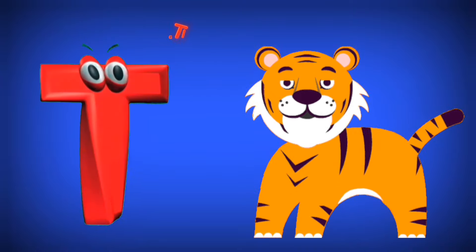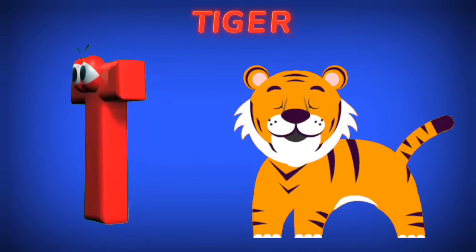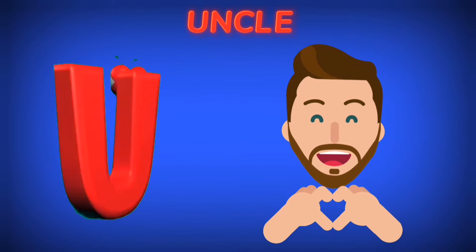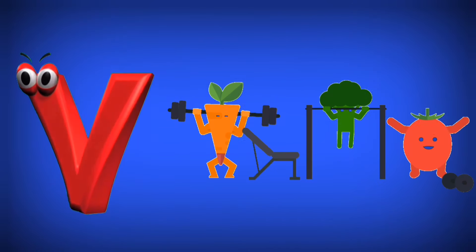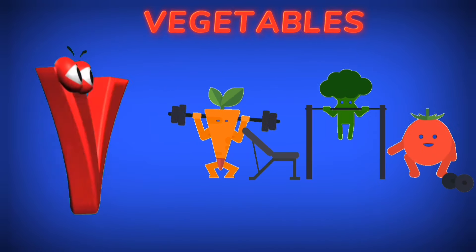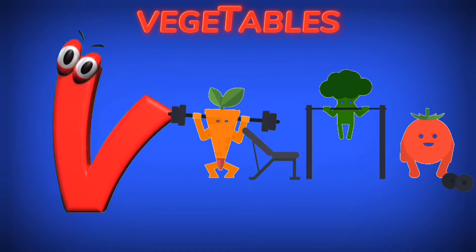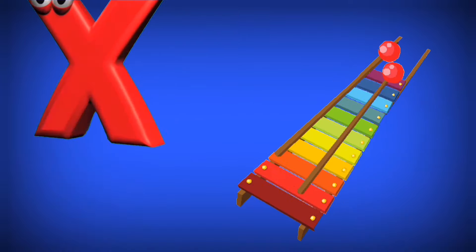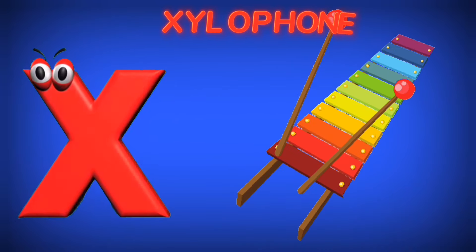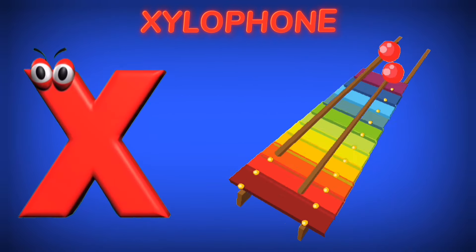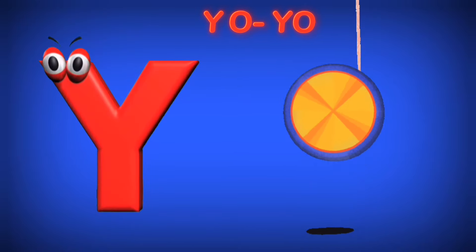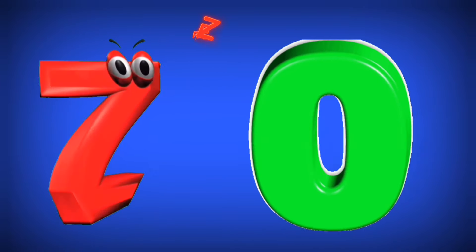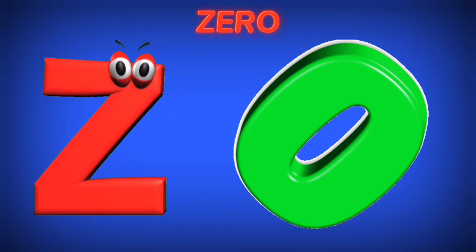T is for Tiger. T, T. Tiger. U is for Uncle. A, A. Uncle. V is for Vegetables. V, V. Vegetables. W is for White. W, W. White. X is for Xylophone. Z, Z. Xylophone. Y is for Yo-Yo. Y, Y. Yo-Yo. Z is for Zero. Z, Z. Zero.